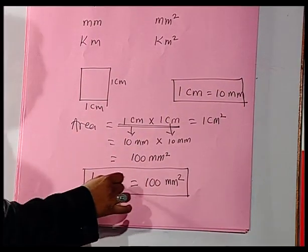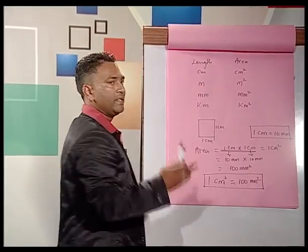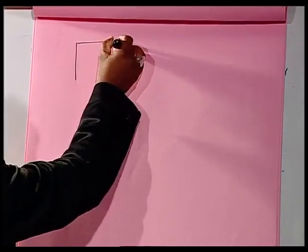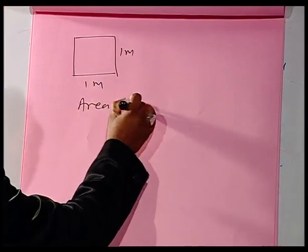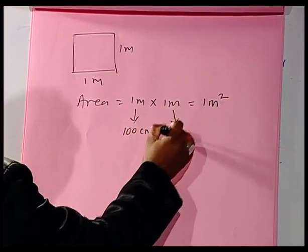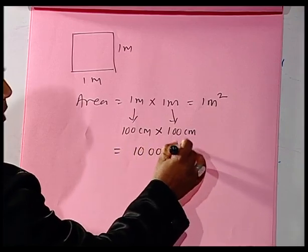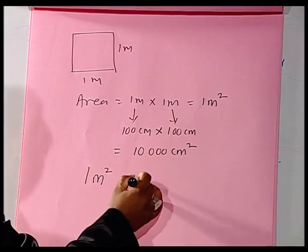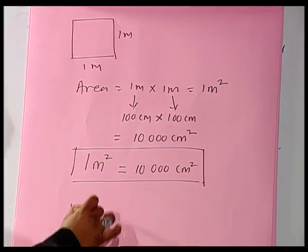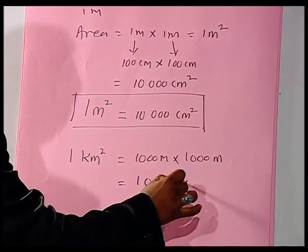Similarly, if we have a square of length 1 meter, the area will be 1 meter times 1 meter, equal to 1 meter squared. In 1 meter we have 100 centimeters, so multiplying 100 by 100 gives us 10,000 centimeters squared. So in 1 meter squared, we have 10,000 centimeters squared. Similarly, in 1 kilometer squared, we have 1,000 meters times 1,000 meters, equal to 1 million meters squared.